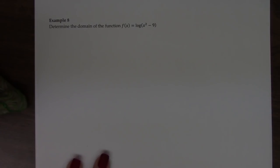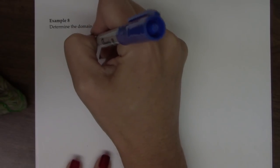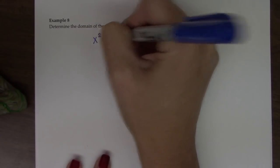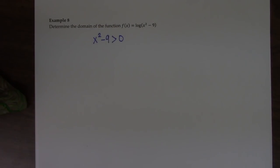So sort of like I did with radicals, I take everything inside the log function and I say, well, it has to be strictly positive. No zeros, no negatives.